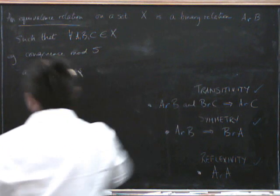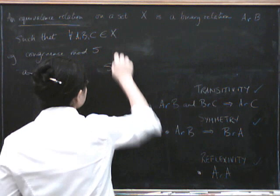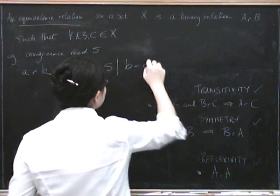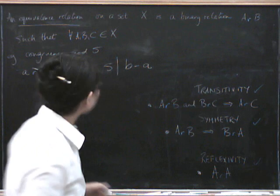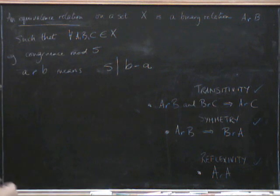So let's instead say that five divides B minus A, because that's what we said that congruence actually meant. Okay, so let's try this.